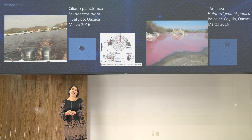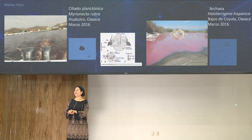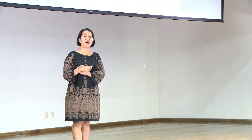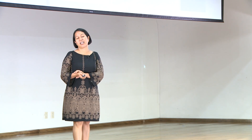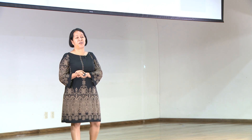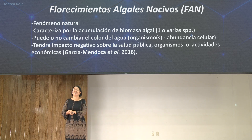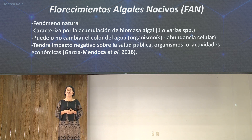Not only algae have the capacity to color the water. The ciliate Mesodinium rubrum (Myrionecta rubra) can give the water an intense red color because it feeds on microalgae and retains their chloroplasts within its organism. Some archaea, which are ancient microorganisms that accumulate pigments in their membranes, can also color water, as was observed for the Laguna de Bajos de Coyula. Therefore, a more stable term must be established to define red tide.